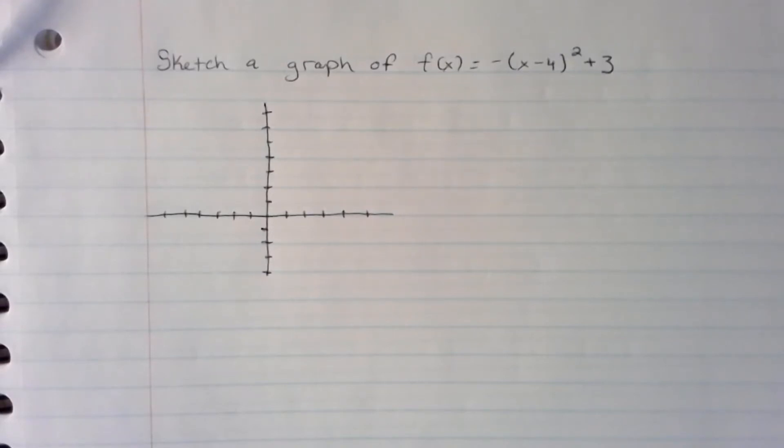Okay, in this video we're going to show how to use the vertex form of this function: negative quantity x minus 4 squared plus 3. We're going to graph that by finding the vertex and also finding two other points.